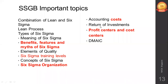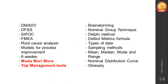Know examples of profit centers and cost centers. For DMAC, know the abbreviation and what each phase stands for: Define, Measure, Analyze, Improve, Control. Also cover DMADV — Define, Measure, Analyze, Design, and Verify — and DFS, which is Design for Six Sigma.